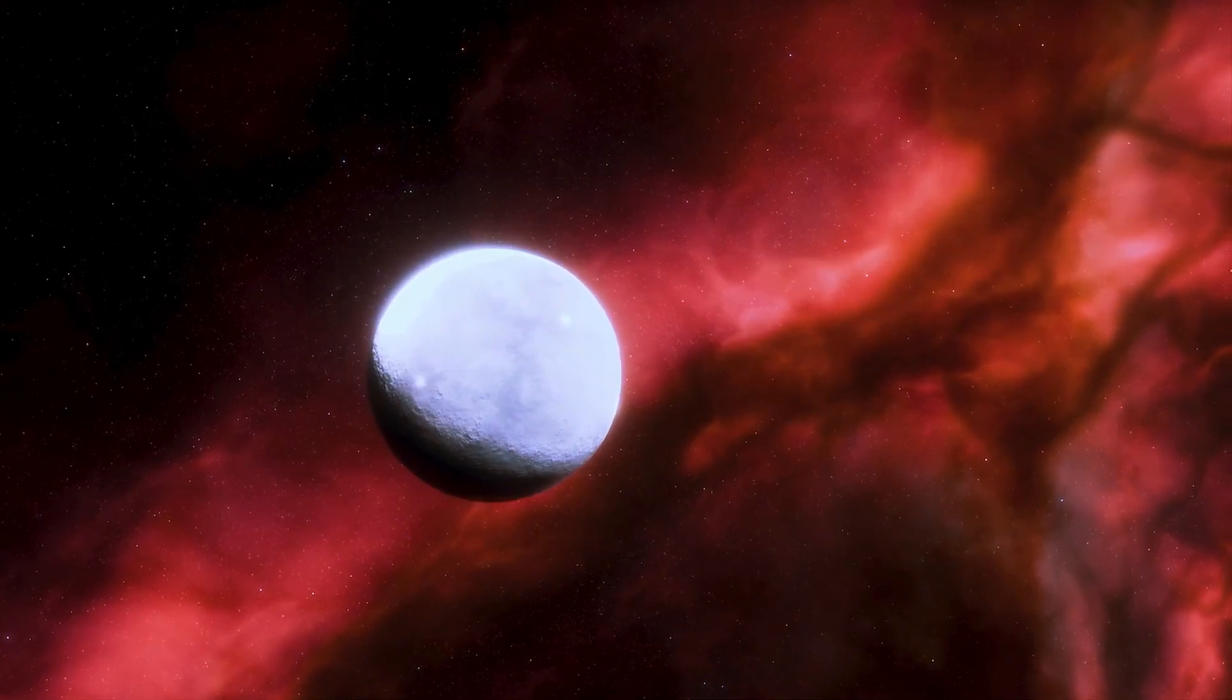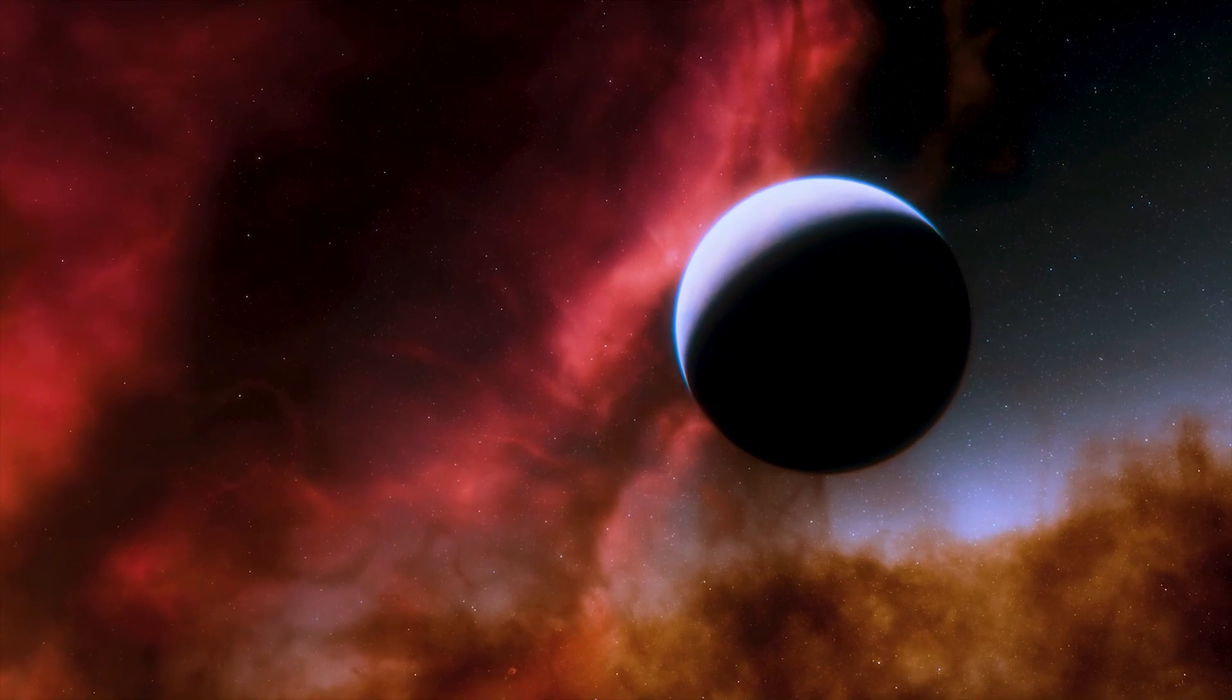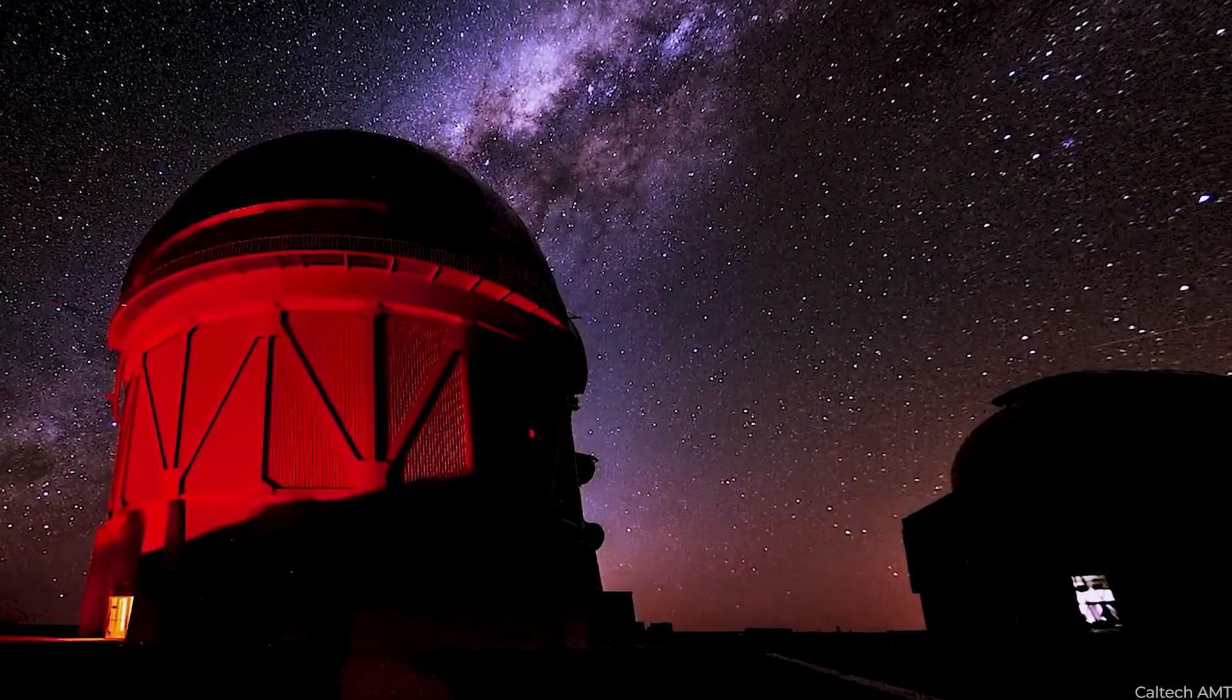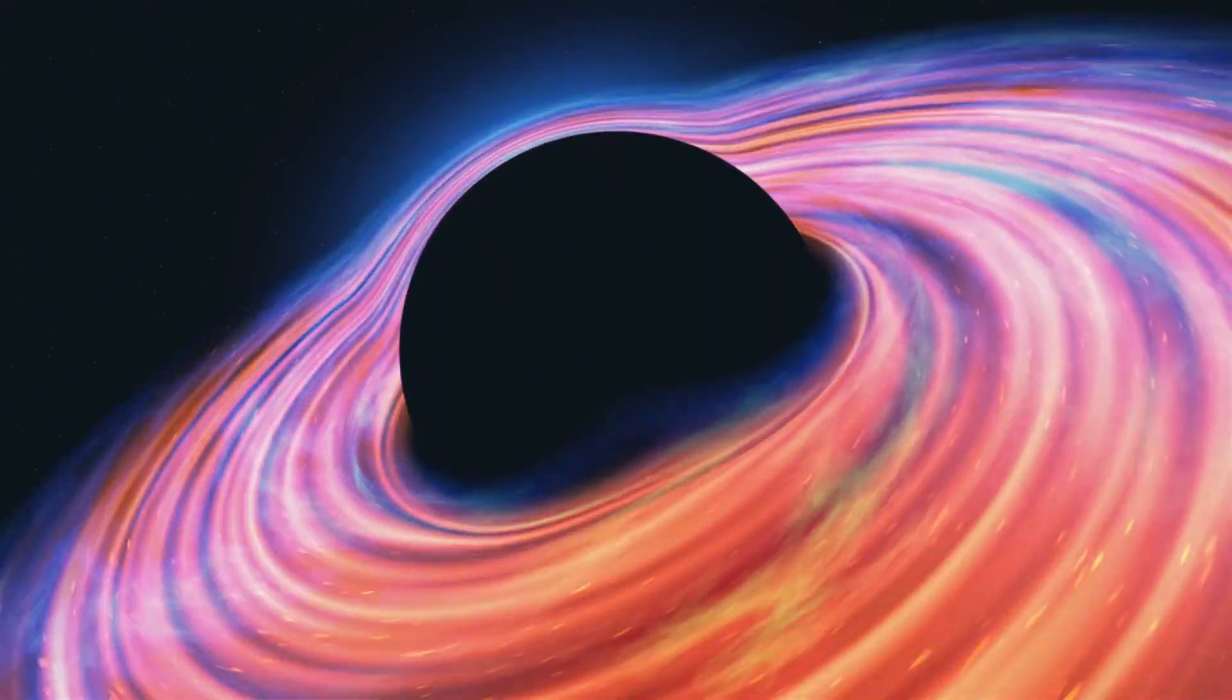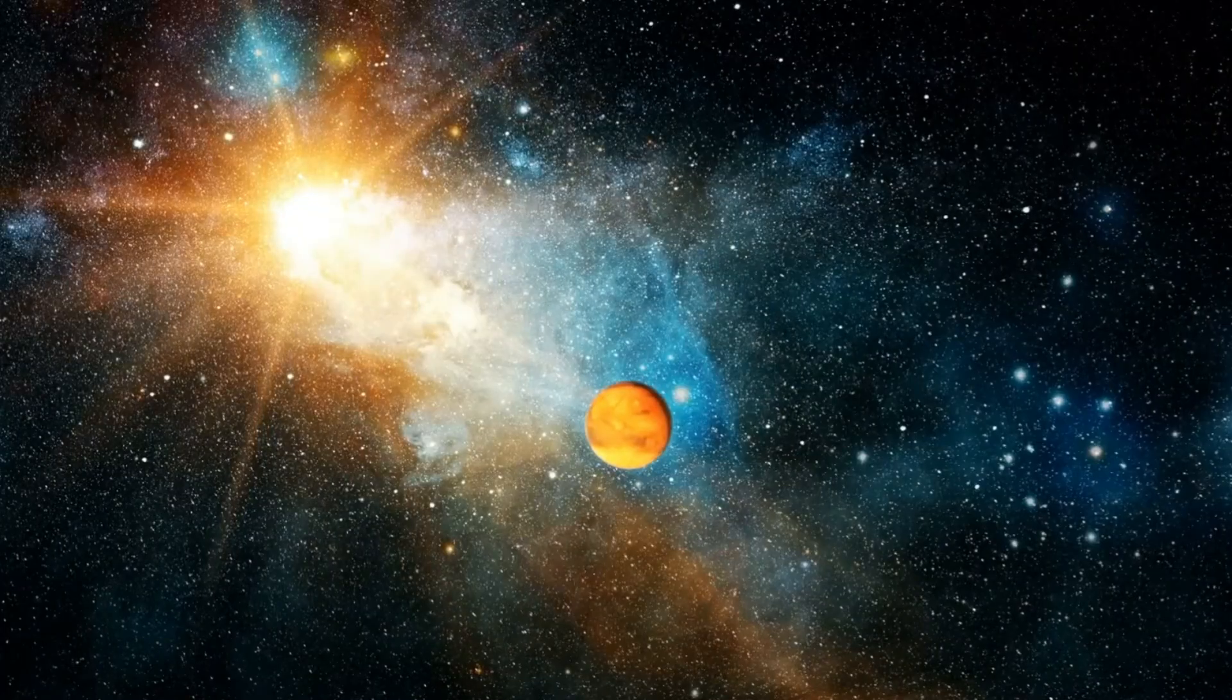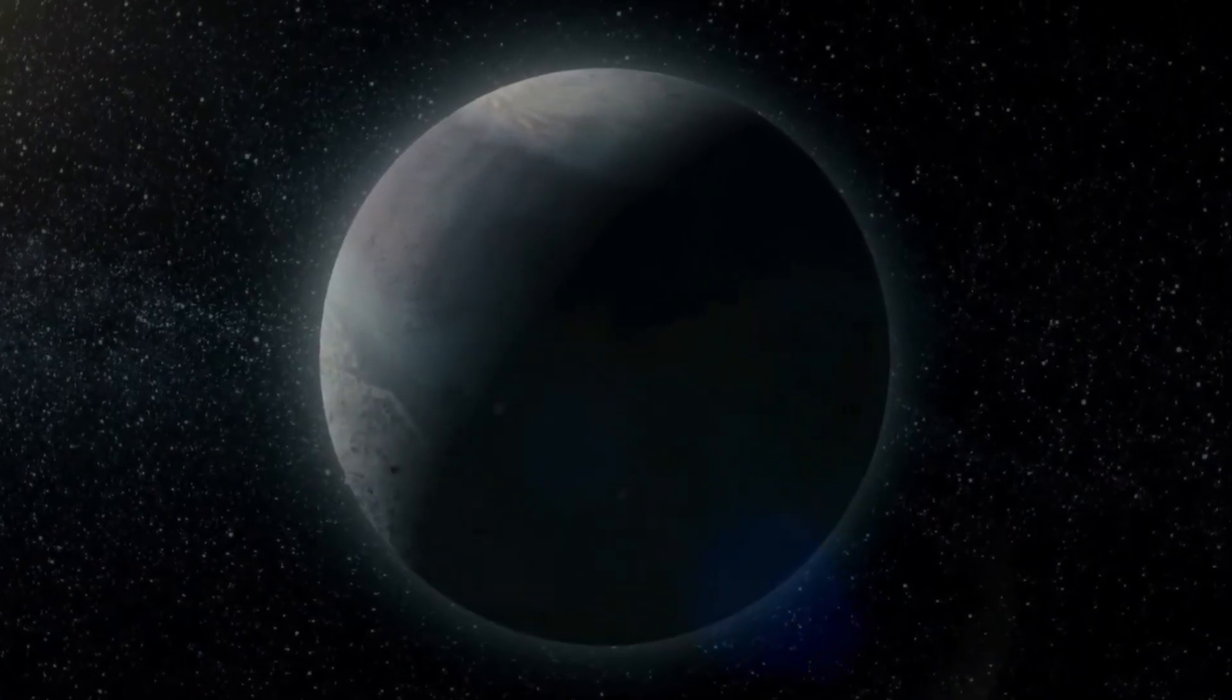But how do we know it's a planet and not something else entirely, like a black hole or an asteroid? One of the most fascinating theories that has emerged is that Planet 9 might not be a planet at all. Some astronomers have proposed that what we're observing could be a primordial black hole, an ancient remnant from the early universe. These black holes would be incredibly difficult to detect, as they wouldn't emit visible light, but their gravitational effects could be seen in the way they disturb nearby objects. This possibility adds an extra layer of mystery.